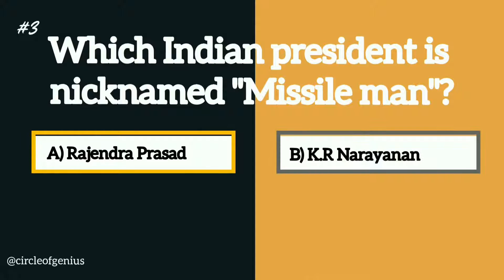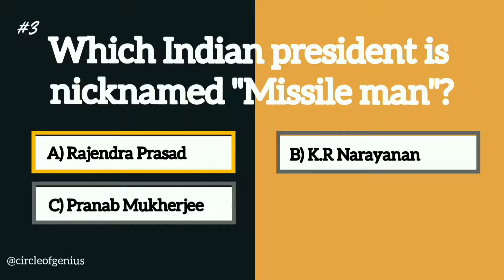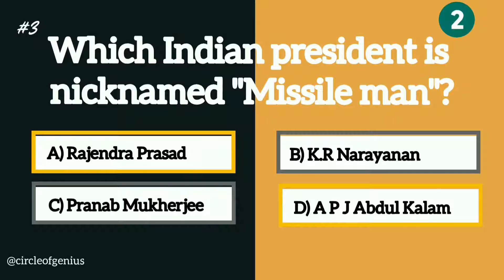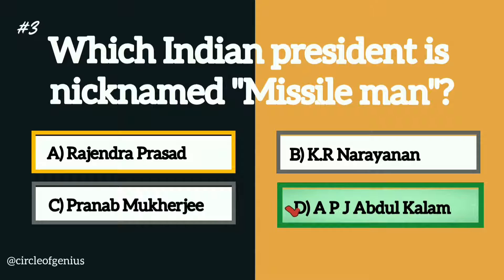Question number three: which Indian president is nicknamed Missile Man? Option A: Rajendra Prasad, B: K R Narayanan, C: Pranab Mukherjee, D: A P J Abdul Kalam. The correct answer is option D, A P J Abdul Kalam.